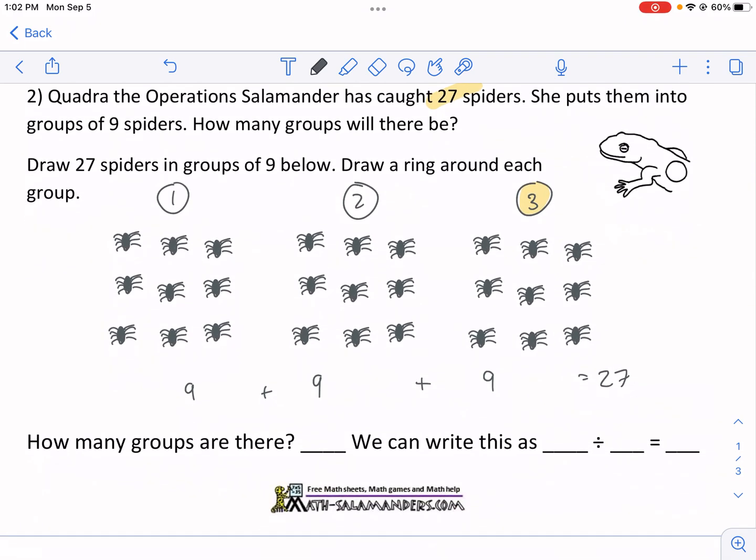So what's the math that we did here? We had three groups. We already answered that. We can write this as, well, we had 27 total. We were putting nine spiders into each meal, which means it lasted us for three meals.